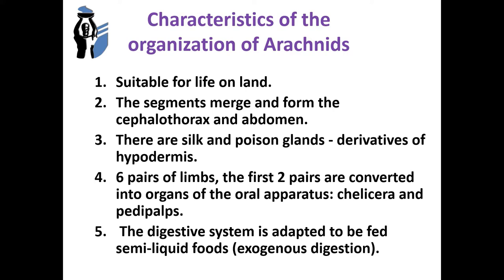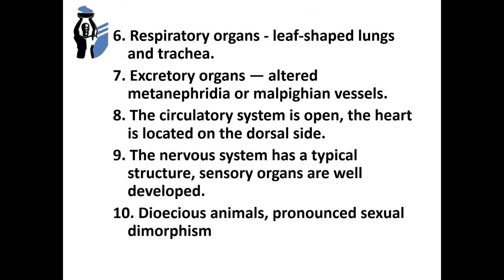The first two pairs of limbs are converted into organs of the oral apparatus: chelicerae and pedipalps. The digestive system is adapted to feed on semi-liquid foods — exogenous digestion. Respiratory organs are leaf-shaped lungs and trachea. Excretory organs are modified metanephridia or Malpighian vessels. The circulatory system is open; the heart is located on the dorsal side. The nervous system has a ganglionic structure; sensory organs are well developed. These are dioecious animals with pronounced sexual dimorphism. The main orders of Arachnids are Scorpiones, Araneae, and the superorder Acarina.